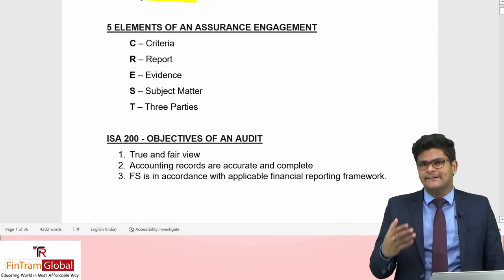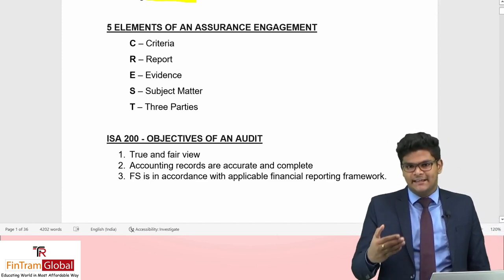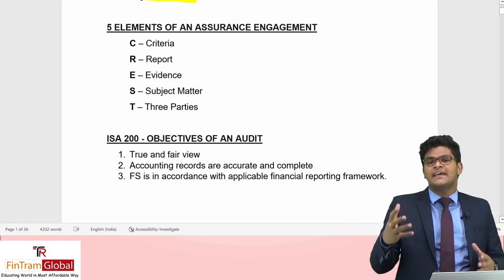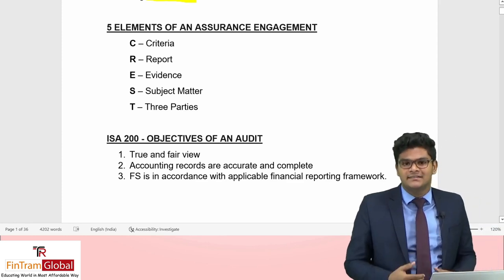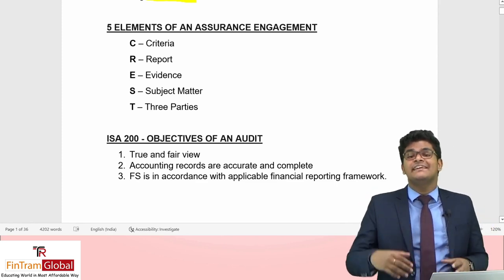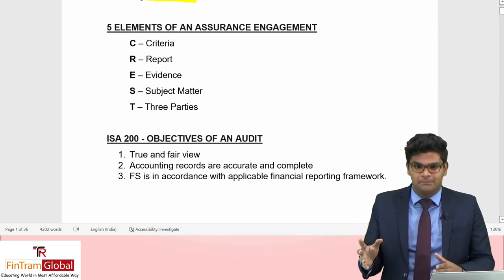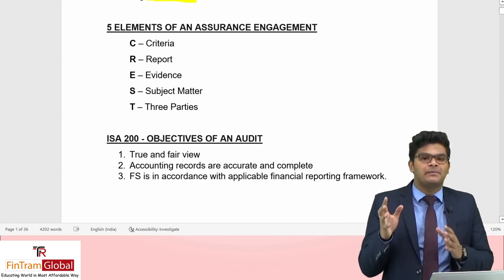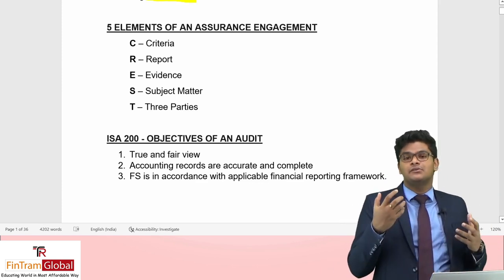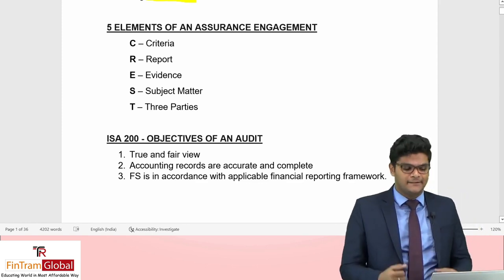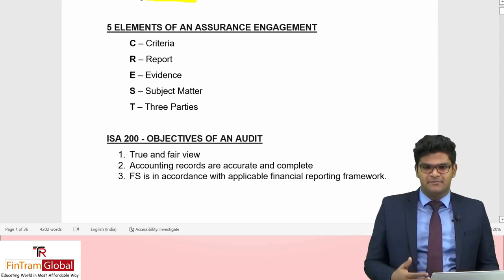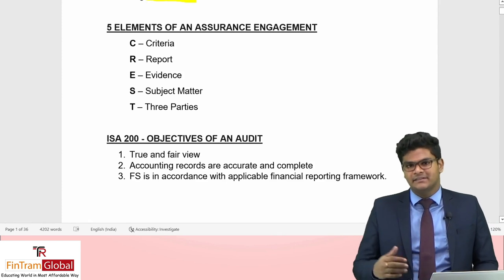Criteria is what the subject matter is assessed against. In an audit, we assess the financial statements based on accounting standards — basically the applicable financial reporting framework — to make sure every principle has been applied appropriately and the financial statements provide a true and fair view. Criteria here is basically the IAS or IFRS standards, as well as the applicable financial reporting framework as a whole.